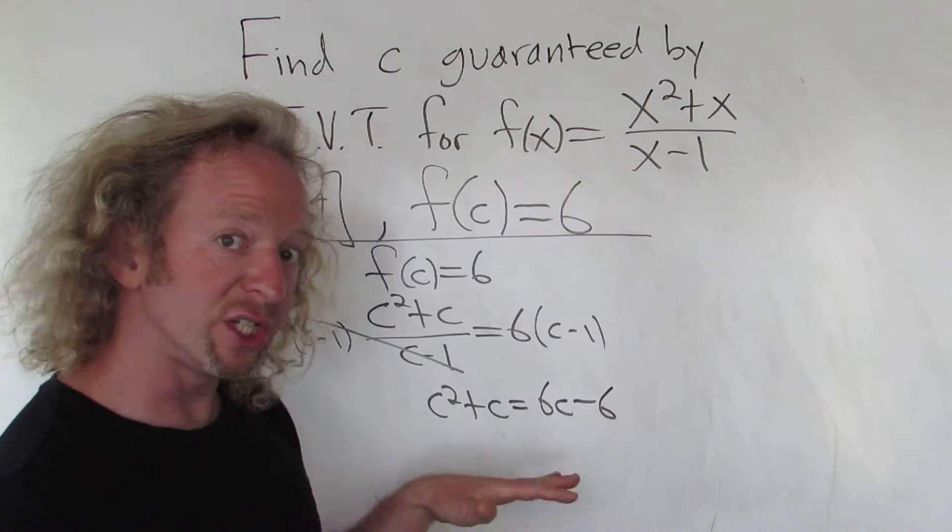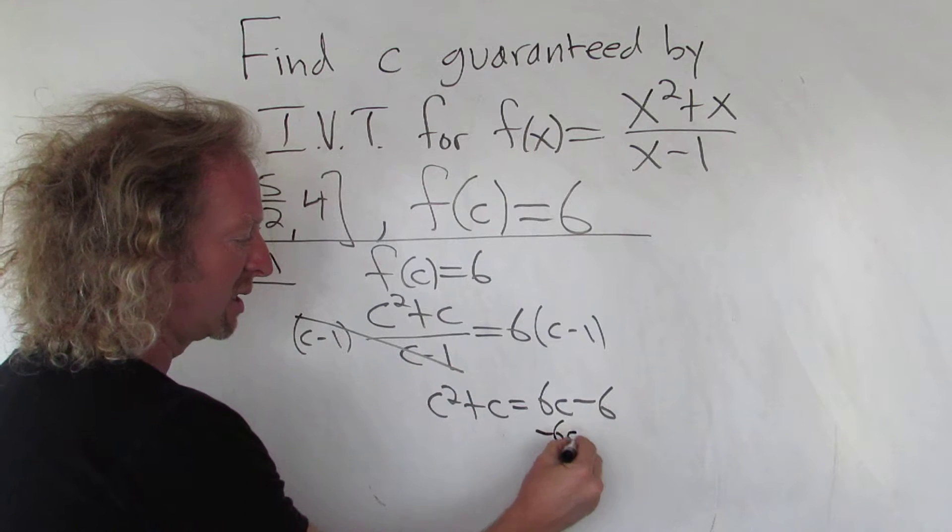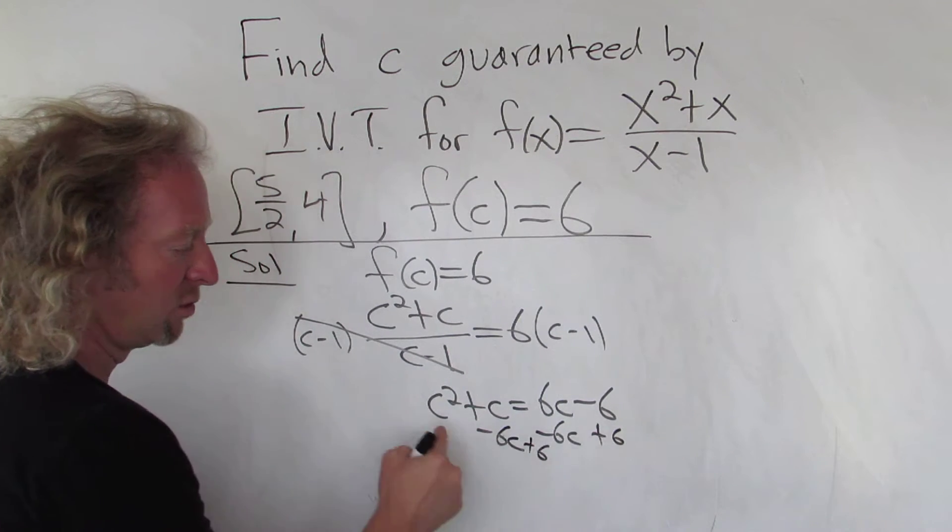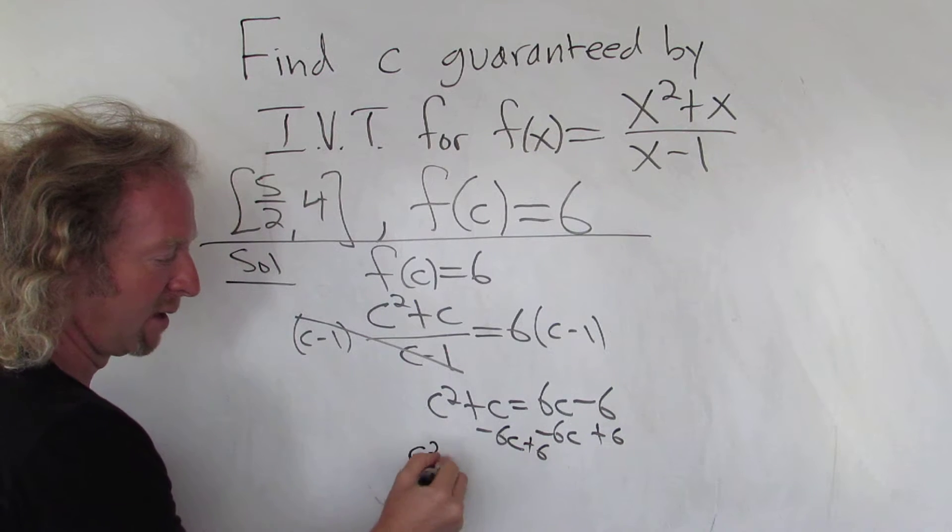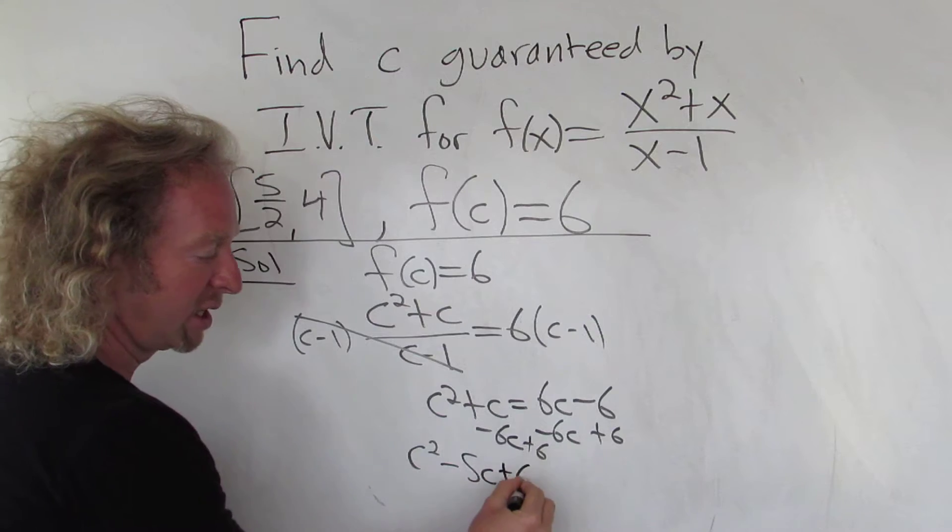This is the quadratic equation in C. So now we can set everything equal to 0. So we can subtract 6C and add 6. So we get C squared C minus 6C is minus 5C plus 6 equals 0.